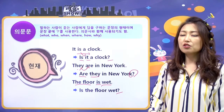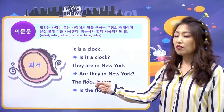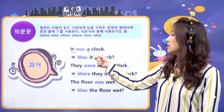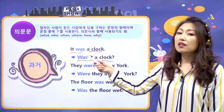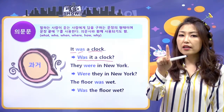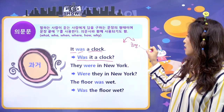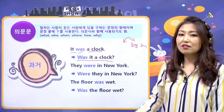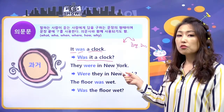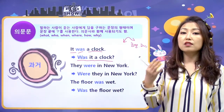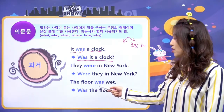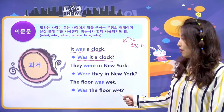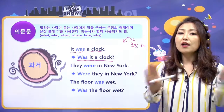비동사 의문문은 진짜 쉬워요. 과거로 만드는 것도 어렵지 않아요. 비동사만 바꾸면 돼요. 과거형으로 바꾸면 'It was a clock', '그것은 시계였어'는 'Was it a clock?'이 되고, 'They were in New York'은 'Were they in New York?', 'The floor was wet'은 'Was the floor wet?'이 됩니다. 과거든 현재든 법칙은 하나, 주어와 동사의 위치를 바꾸면 됩니다.